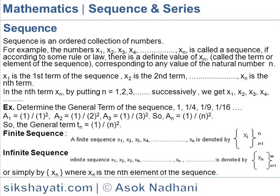X1 is the first term of this sequence. X2 is the second term. Like that, XN is the Nth term. In the Nth term XN, by putting 1, 2, 3 successively, we get values of X1, X2, X3, X4, like that. The Nth term of a sequence is a function of the positive integer N. The Nth term is also called the general term of the sequence.